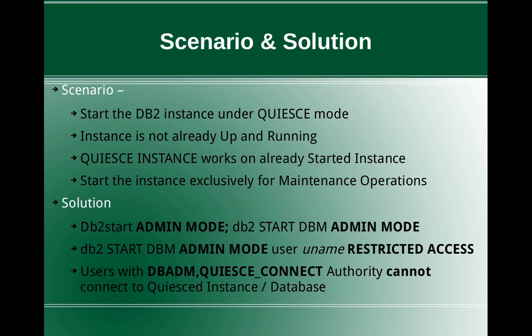This slide talks about the scenario and the solution. The scenario is pretty straightforward. We want to start the DB2 instance under quiesce mode. This is a scenario where the instance is not already up and running. If the instance was already up and running, we can use the quiesce instance command, which works on an already started instance. But we are discussing a different situation — the instance is not already up and running, but we want to start the instance in quiesce mode during the start itself, exclusively for maintenance operations.